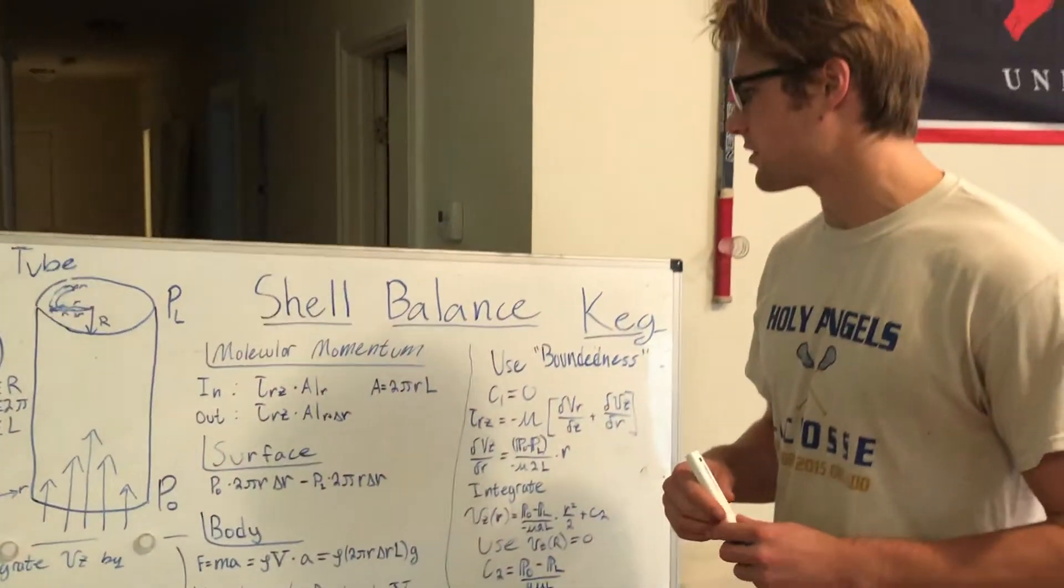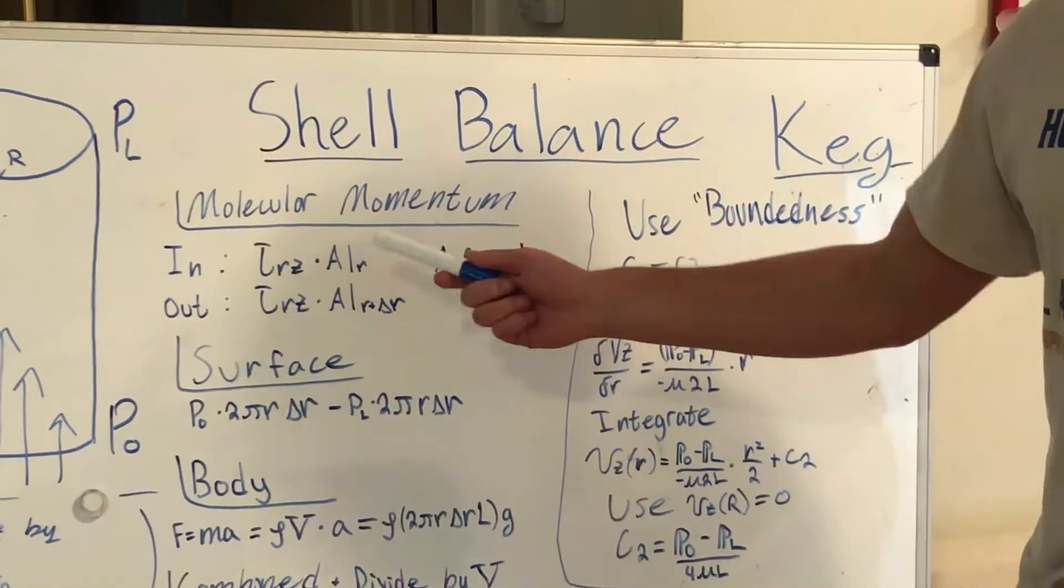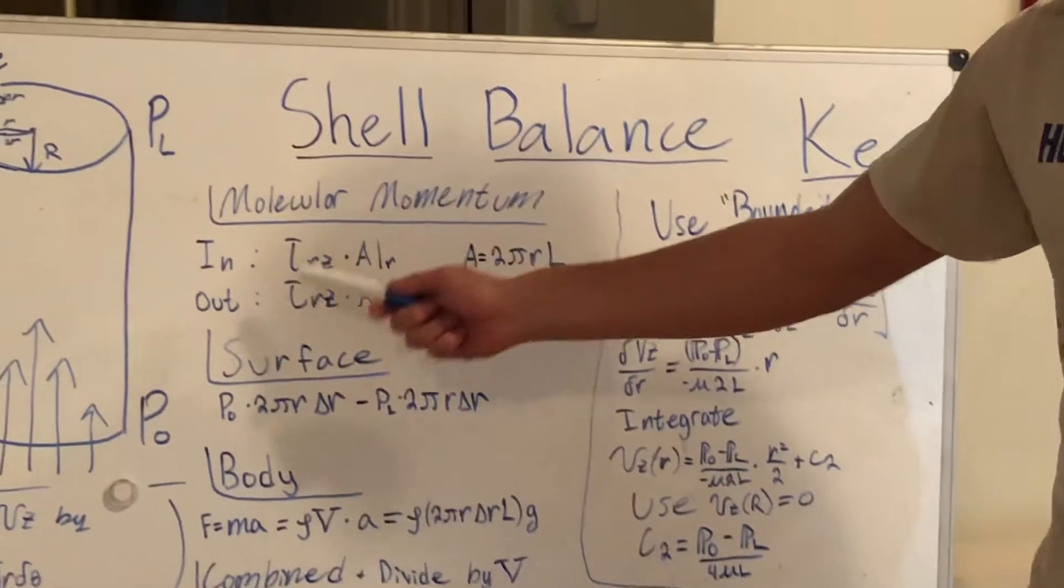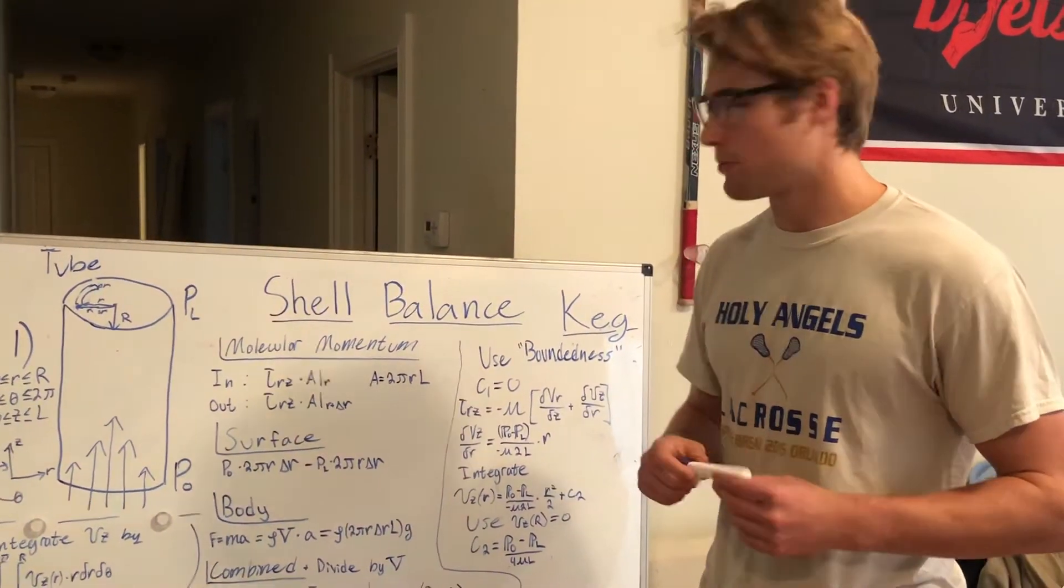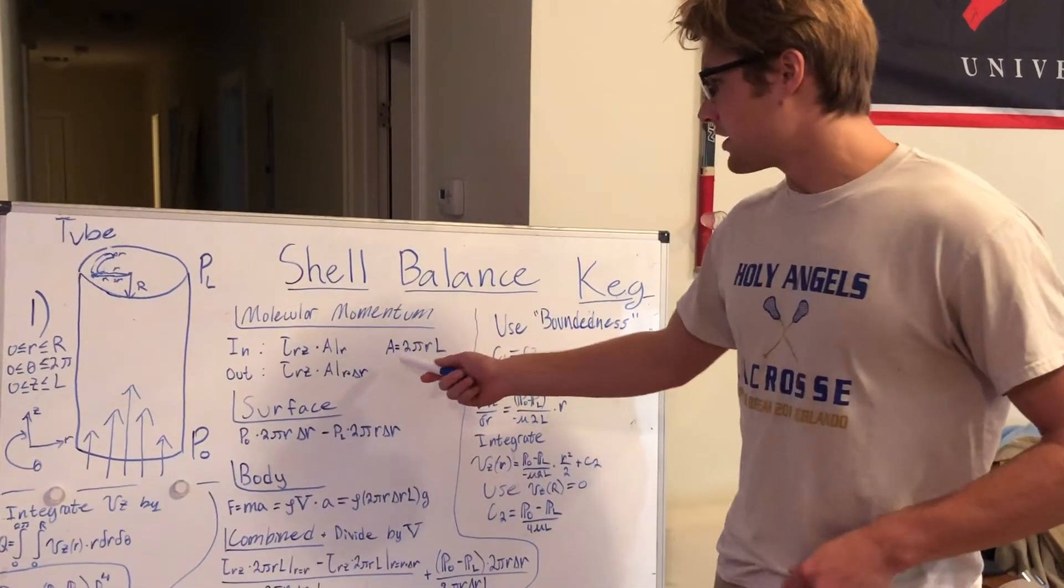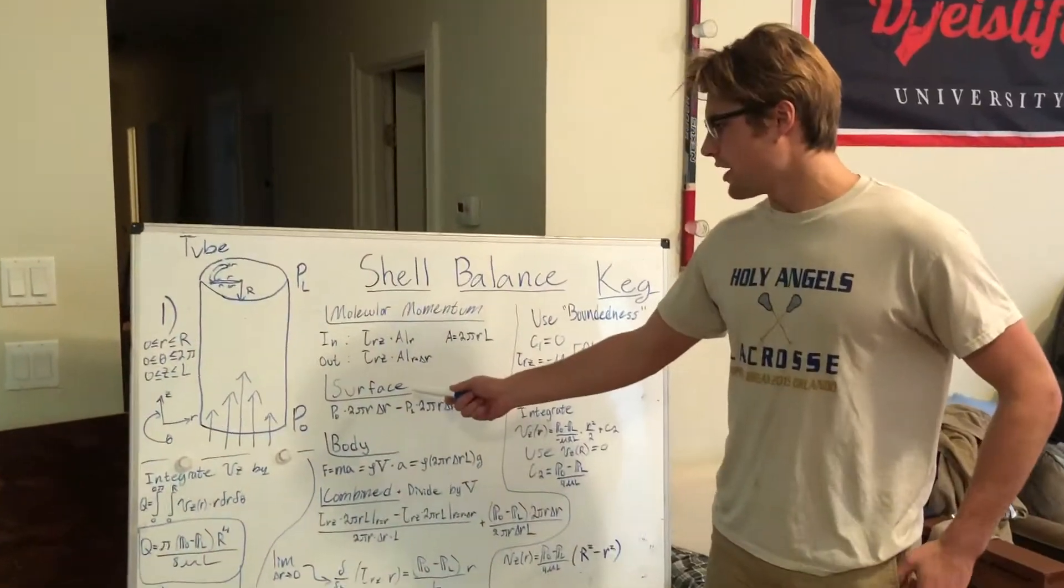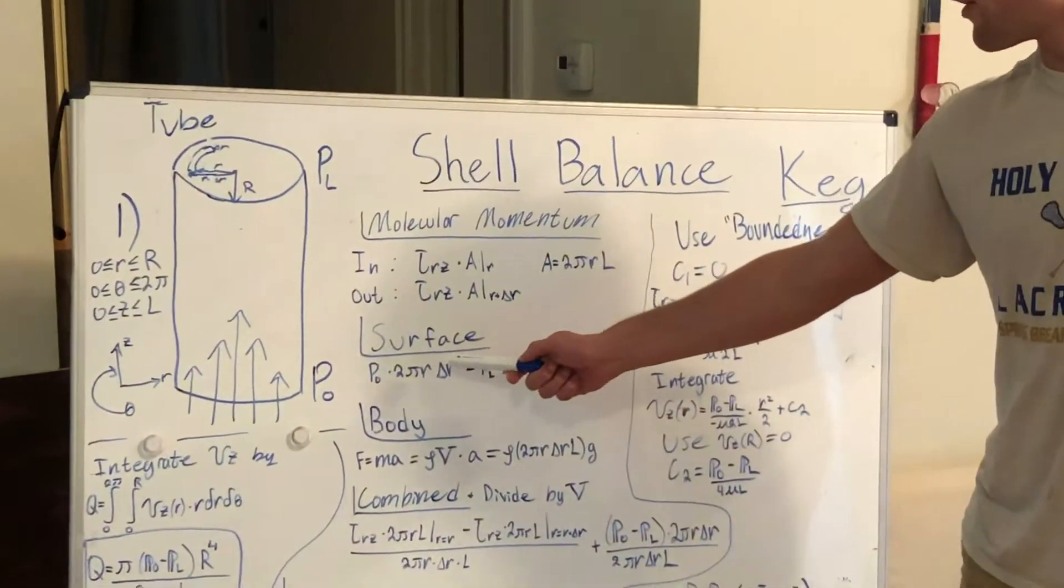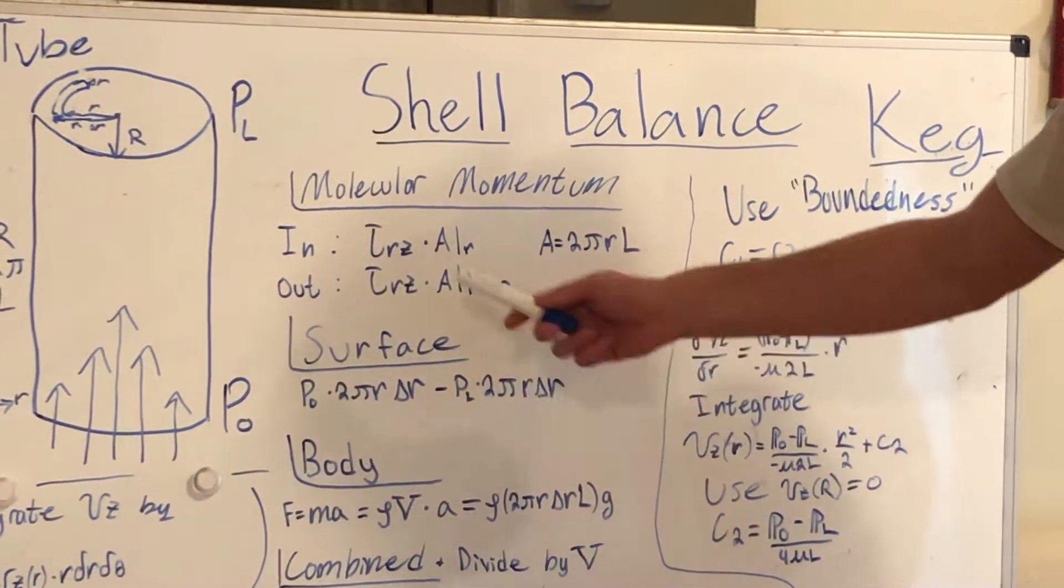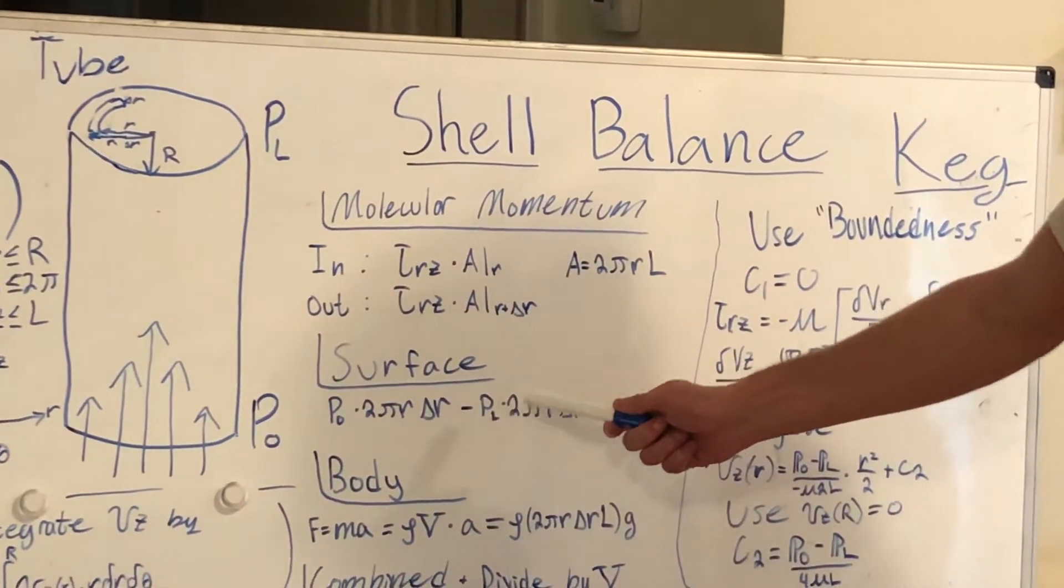Now we need to set up our momentum balance. The momentum that will factor into this equation is our molecular momentum. So coming in, we have our stress times our area at r. Coming out, we have our stress times our area at r plus delta r. This covers both sides of the shell. As you can see here, our area, because it is a cylinder, can be described as 2πrL. Now we need to describe our surface forces. So here we have our pressure times 2πr dr minus our pressure at the bottom times 2πr dr minus our pressure at the top times 2πr dr.